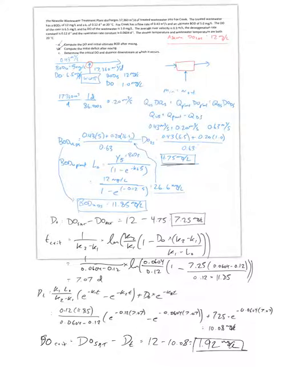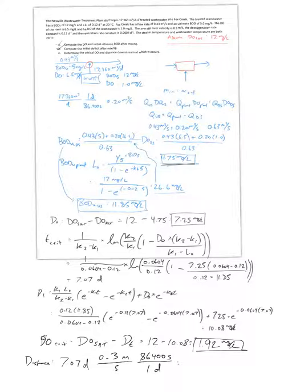The critical distance is calculated as: x = t_crit × velocity = 7.07 days × 0.3 m/s × 86,400 seconds/day = 183,000 meters, or about 183 kilometers downstream. That concludes Part C.